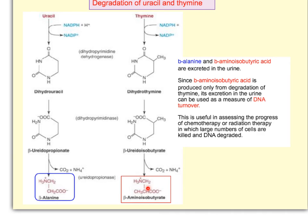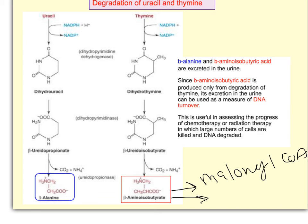For the most part beta-aminoisobutyrate gets excreted, but it can also be converted into malonyl-CoA and used in fatty acid synthesis, or converted into succinyl-CoA and used in the TCA cycle.